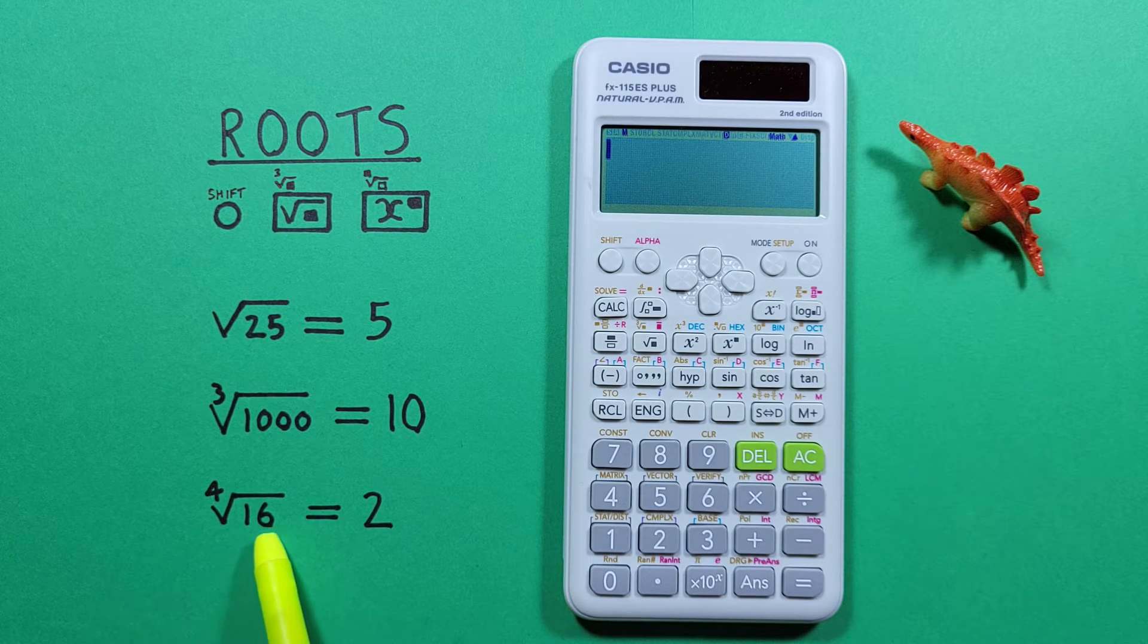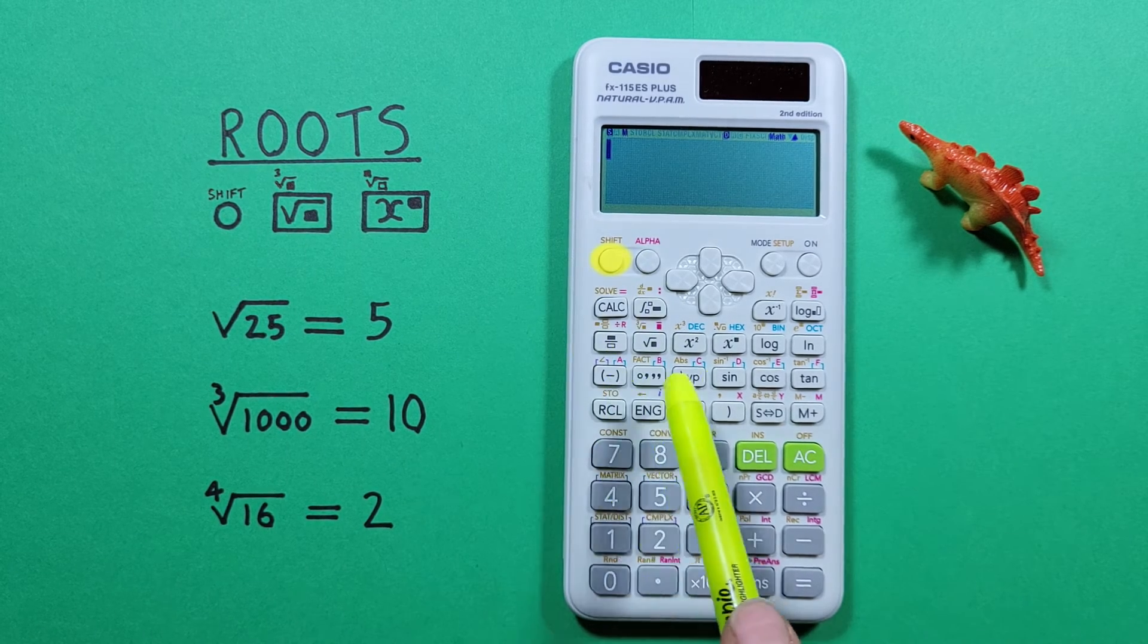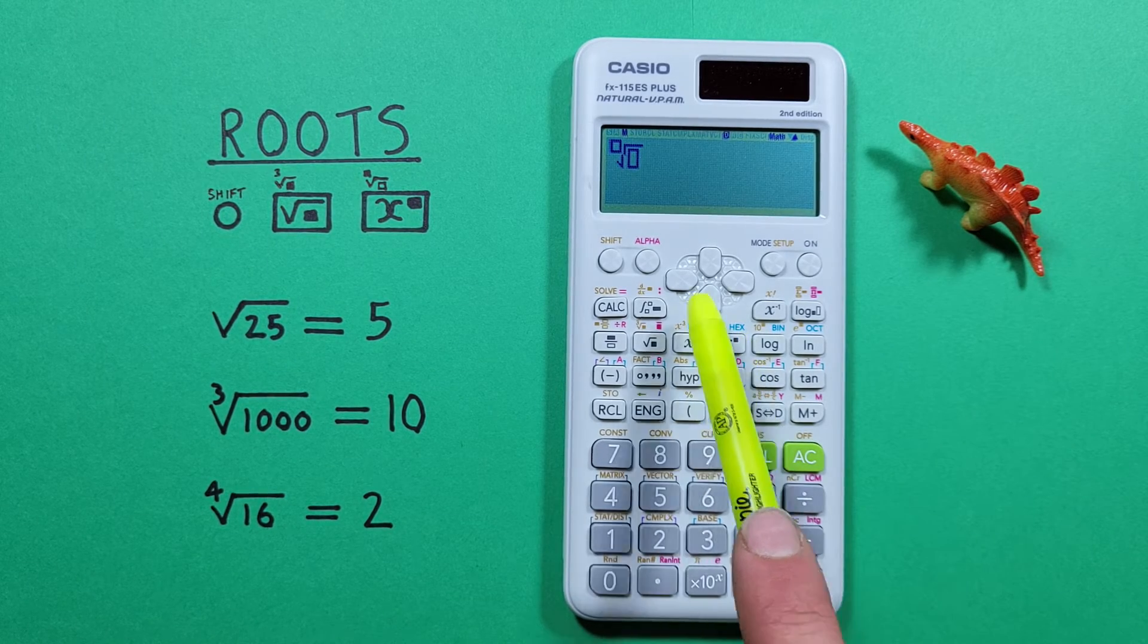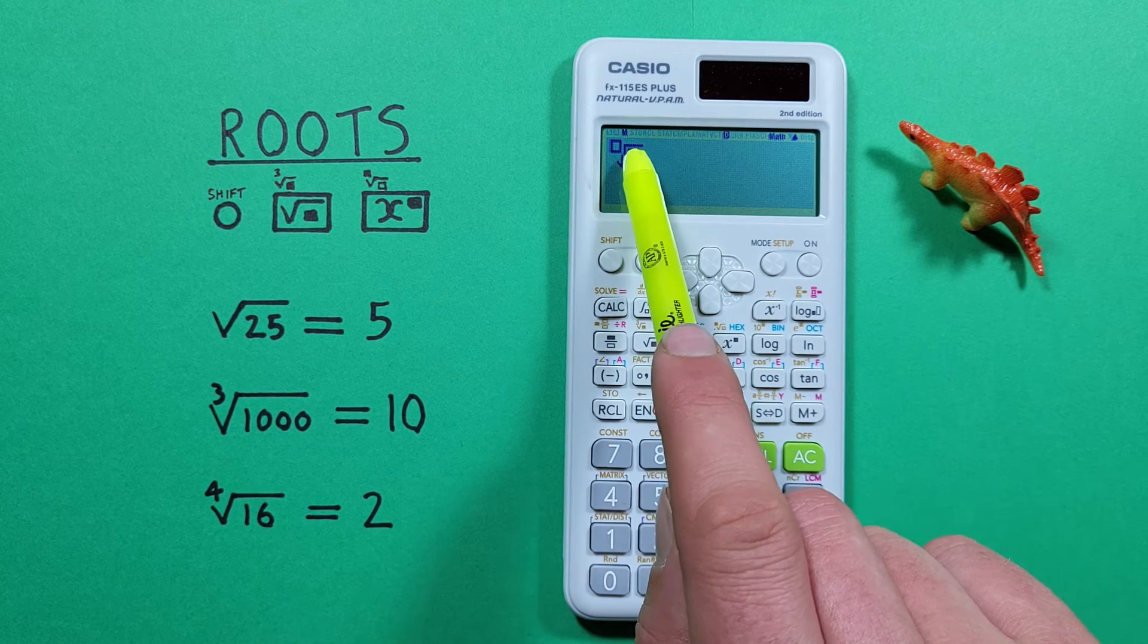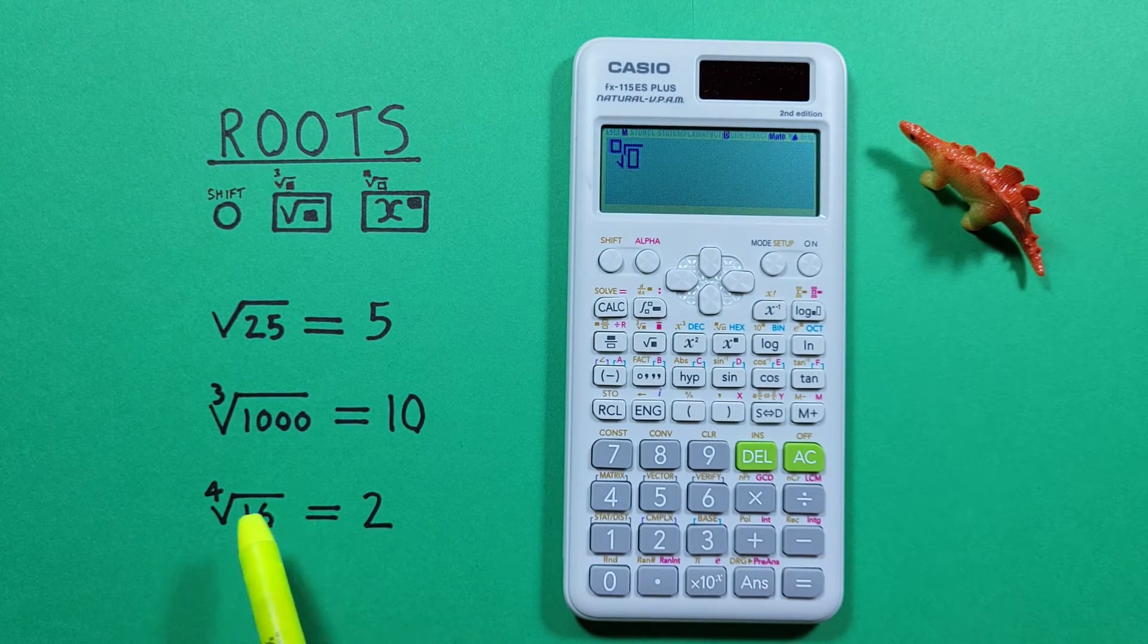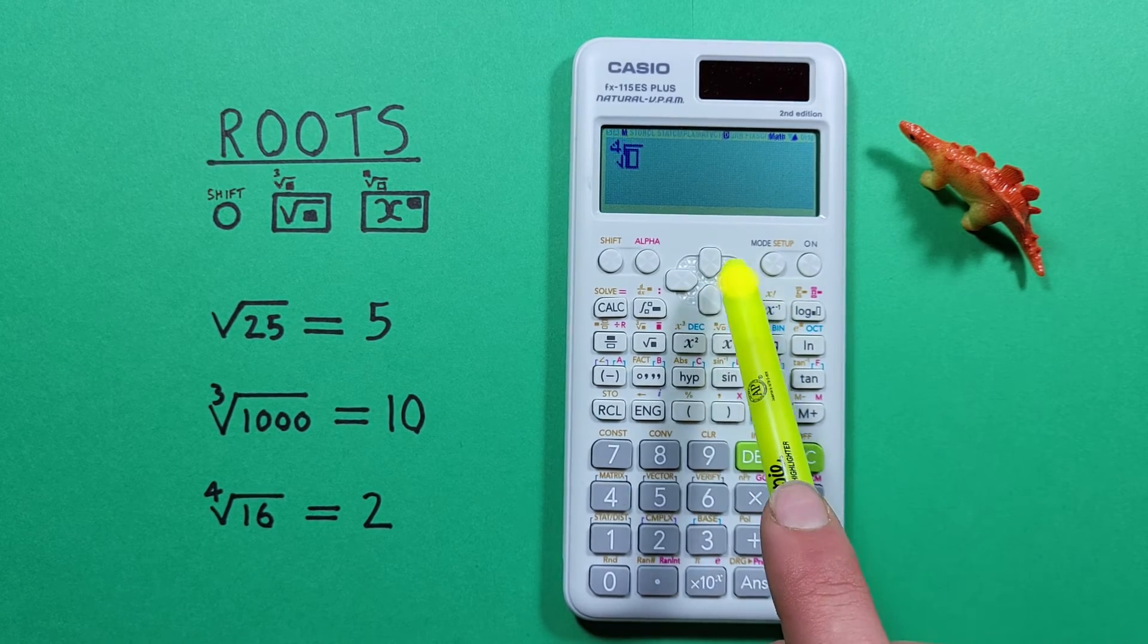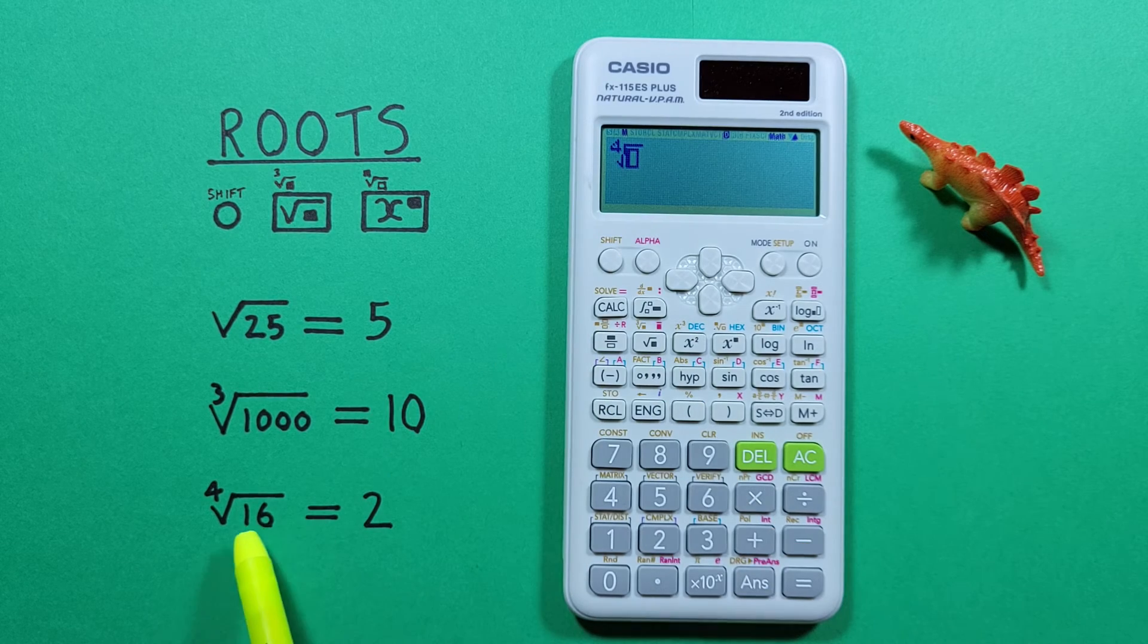If we want to find the fourth root of 16, we press shift and then the exponent key with the shift function of nth root, and now we have two boxes. The first box is where we enter our root, so we enter 4, then press the arrow key to the right so our cursor moves down into the lower box.